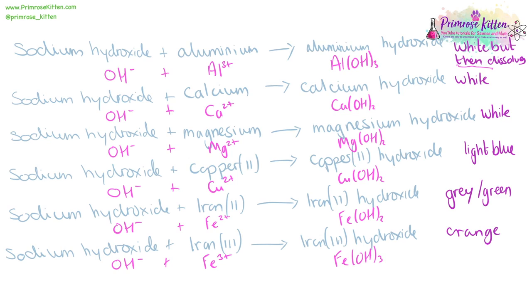So aluminum is three positive, so it needs three negative ions to become neutral overall. Calcium is two positive, so it needs two negative ions to become neutral overall. Magnesium OH2, calcium OH2, iron OH2, iron OH3.